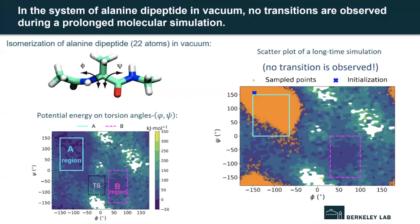Let me demonstrate the whole process of our framework using the system of the isomerization of alanine dipeptide in vacuum. This system contains 22 atoms, which results in a 66-dimensional configuration space. The isomerization of this system can be characterized by two torsion angles, phi and psi. The plot below shows the potential energy projected on the two torsion angles phi and psi.